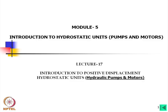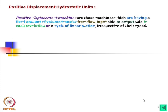Introduction to positive displacement hydrostatic units — hydraulic pumps and motors. Positive displacement machines are those which have a fixed amount of volume transfer from the input side to the output side in each revolution or cycle of linear motion, irrespective of their speed. Whatever the geometric displacement, the same amount is transferred from input to output side, whether in rotary machines or linear actuators.